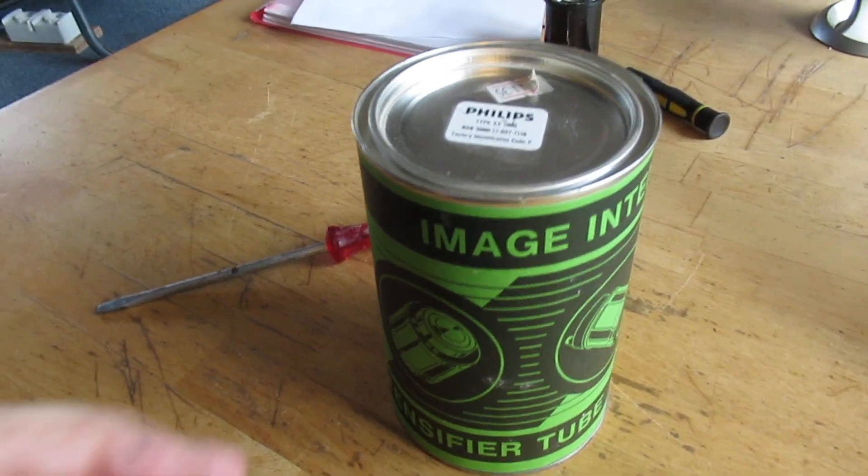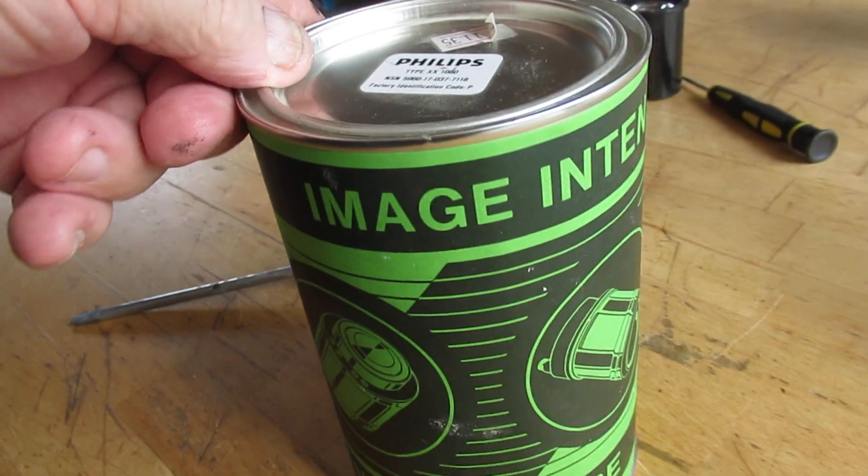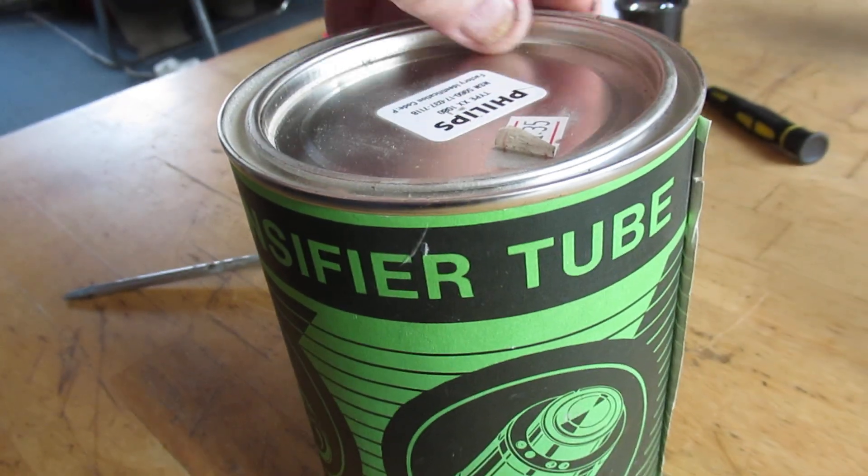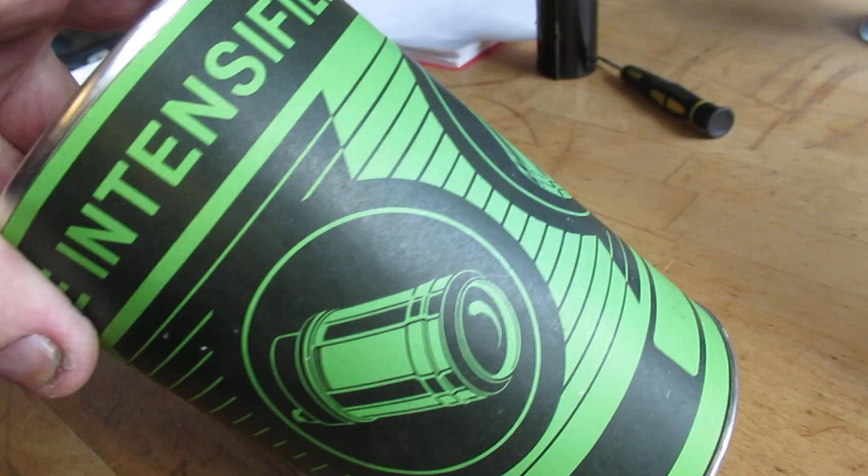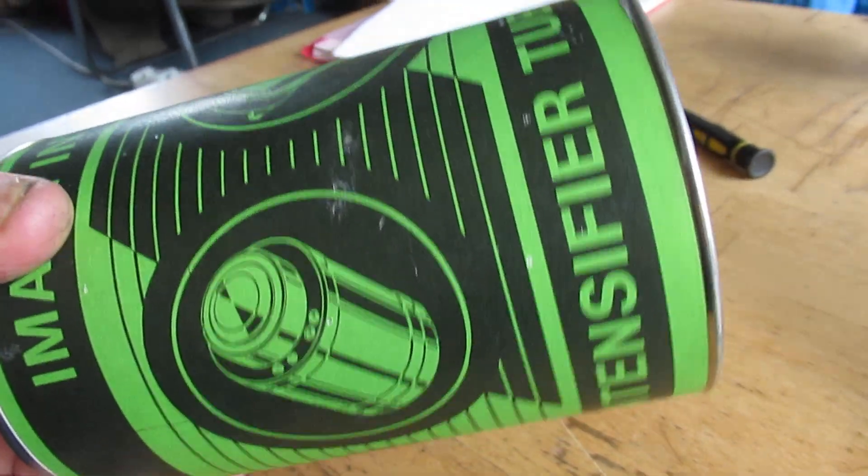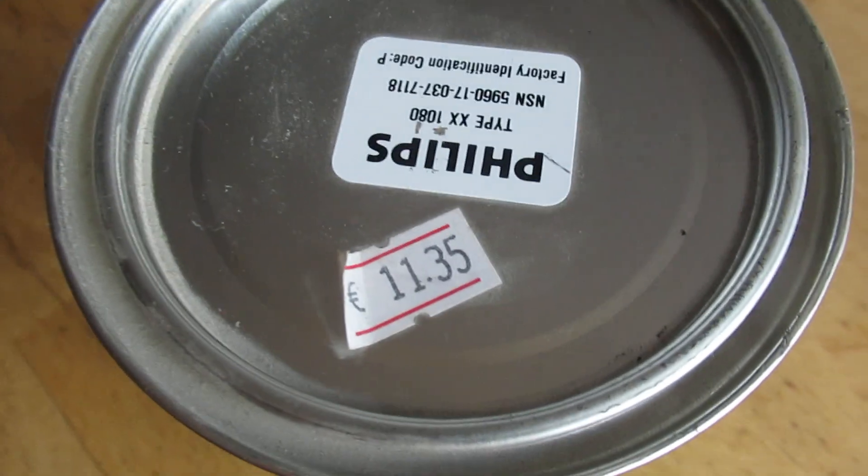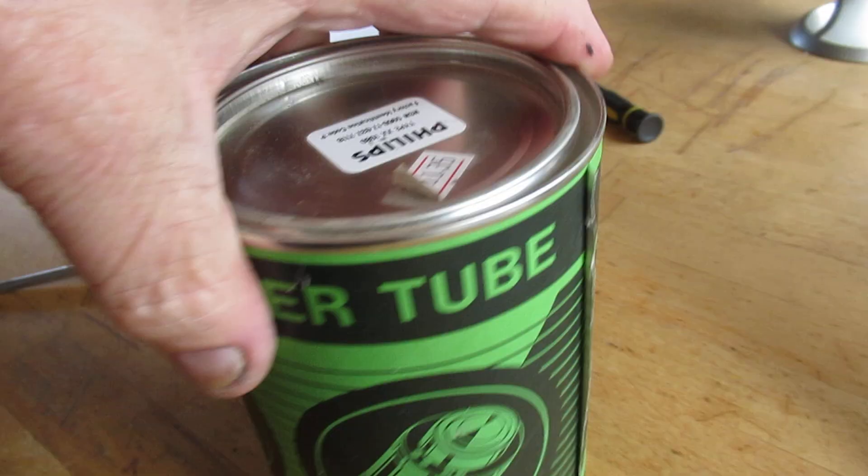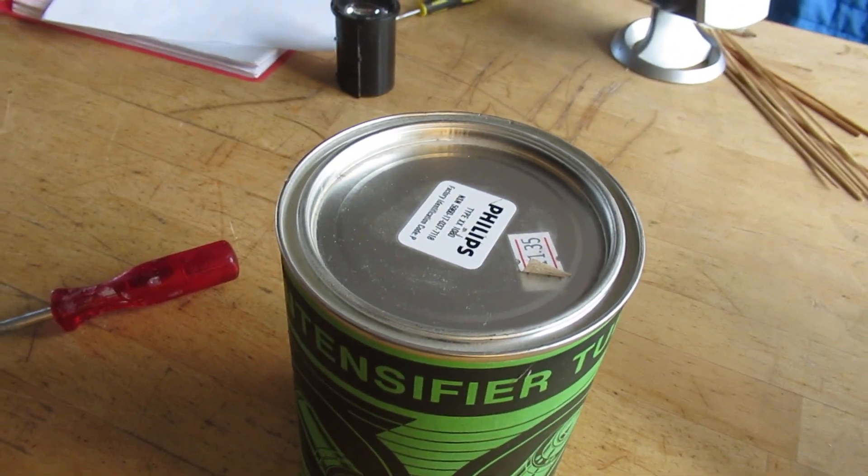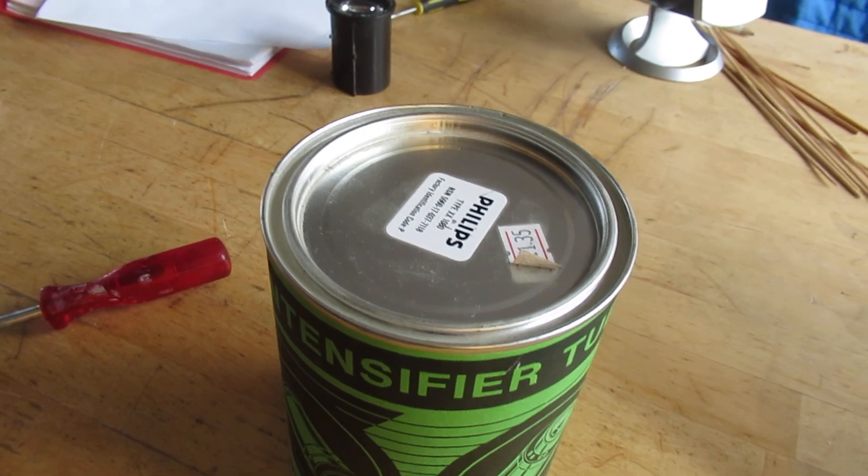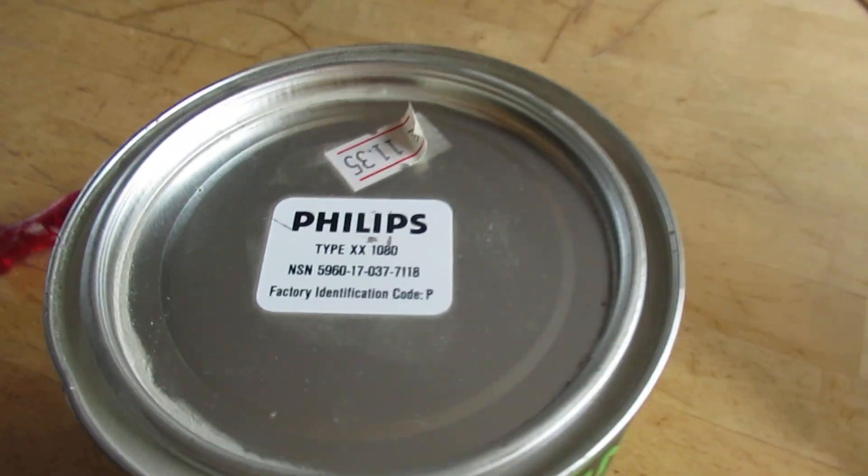This will be a small talk about an image intensifier tube from the 1980s. I bought it in the past for 11 euros on a dump website. Anyway, here it is again, the type number.